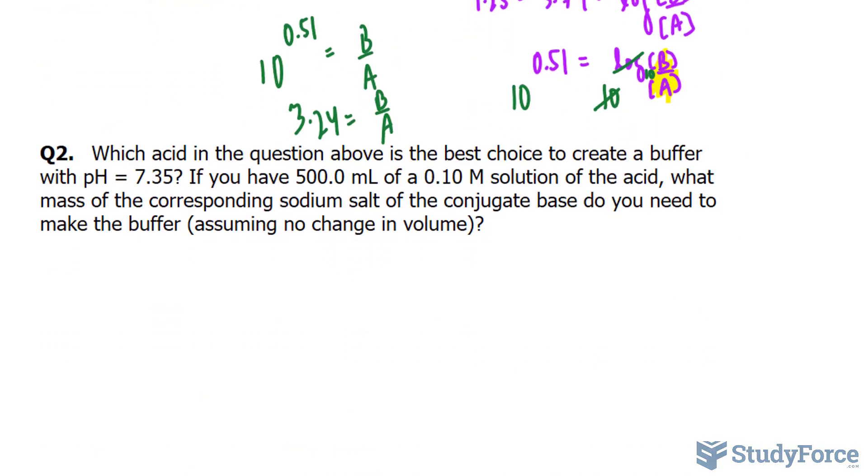Which acid in the question above is the best choice to create a buffer with a pH of 7.35? So this time we will replace pH with this number. And we've been told that we have 500.0 milliliters of a 0.10 molar solution of the acid. What mass of the corresponding sodium salt of the conjugate base do you need to make the buffer? So let's write down the Henderson-Hasselbalch equation again.